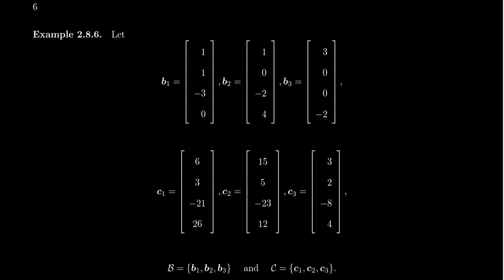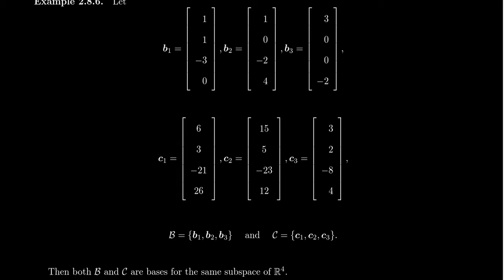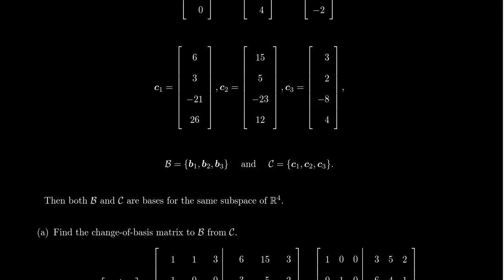Let's do an example. We'll take three vectors from R4. The first basis B consists of B1 = (1,1,-3,0), B2 = (1,0,-2,4), and B3 = (3,0,0,-2). We'll take another basis C for the same vector space: C1 = (6,3,-21,26), C2 = (15,5,-23,12), and C3 = (3,2,-8,4). It's not too difficult to show that both sets of vectors, the B's and the C's, are linearly independent — and in fact the process of computing the change of basis matrix will show that. These both form a basis for a subspace of R4. Since these vectors live in R4 but there are only three of them, they can't span all of R4; they span a three-dimensional subspace inside R4.